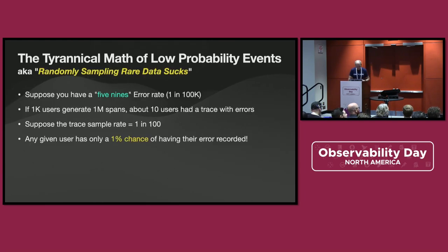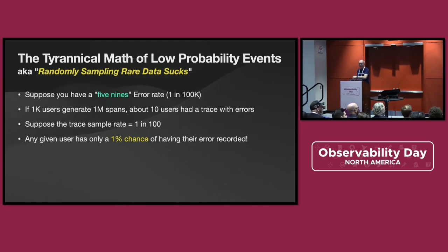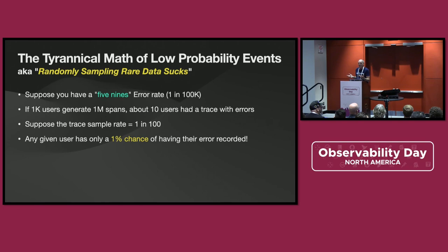Not right. When you have low probability events — particularly when the low probability events are lower probability than your sampling rate — you don't get those events. If you have 1,000 users generating a million spans and your error rate is five nines, that means only 10 of those users had errors. But if you're sampling at one in 100, that means 99 out of 100 errors aren't getting sampled. On any given day with a million users, you're not even getting any of them.